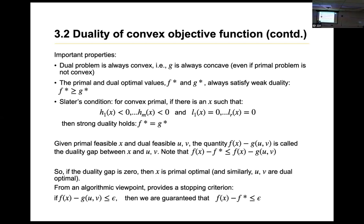We can set the duality gap to any low value. We may not always reach the optimal solution exactly, but if it is at a low enough value, we can say it is close enough to the actual optimal value and stop there.